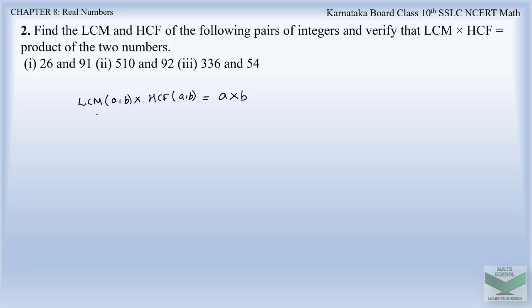For this, let us first find the LCM and HCF of the two numbers by the prime factorization method. Let us take the first question: 26 and 91. So let us factorize 26. Since it is an even number it is divisible by 2, giving us 2 × 13. Since 13 is a prime number, we stop here.